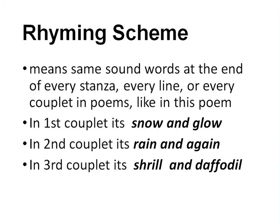Here I would like you to focus on the rhyming scheme. The rhyming scheme means the same-sound words at the end of every line or couplet in the poem. For example, in the first couplet we have 'snow' and 'glow'; in the second couplet it's 'rain' and 'again'; in the third couplet it's 'shrill' and 'daffodil.' These are some examples of rhyming pairs. Now, students, find the other rhyming words in this poem yourselves.